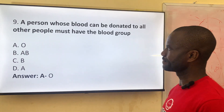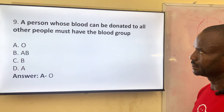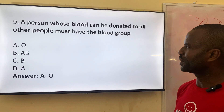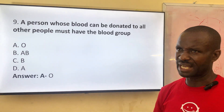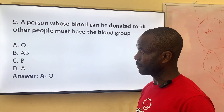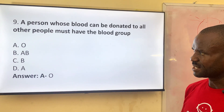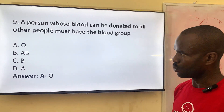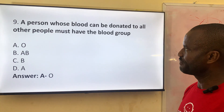Next question: a person whose blood can be donated to all other people must have the blood group of — we said we have four types of blood group. Option A: blood group O. Option B: A. Option C: B. Option D: AB. The answer is group O. Only blood group O can donate blood to everyone.